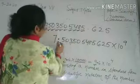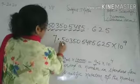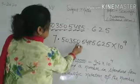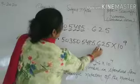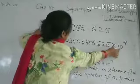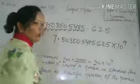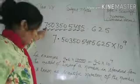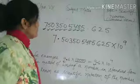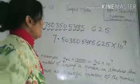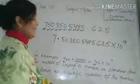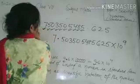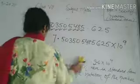The number written in standard form is 7.503505485625 into 10 raised to power 9. In this way, you write large numbers in standard form.